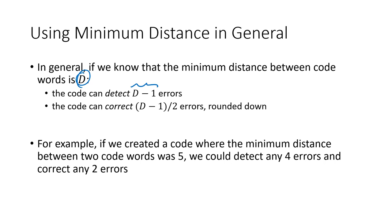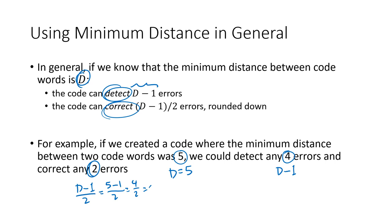So detecting, we can detect a whole bunch of errors and correct at most half that many. For example, if we created a code where the minimum distance between any two code words was five — d = 5 — then we could detect any four errors (d minus one = 4) and correct any two errors (d minus one divided by two = 4 divided by 2 = 2). The more spaced apart the messages in our dictionary are, the more errors we can detect and correct.